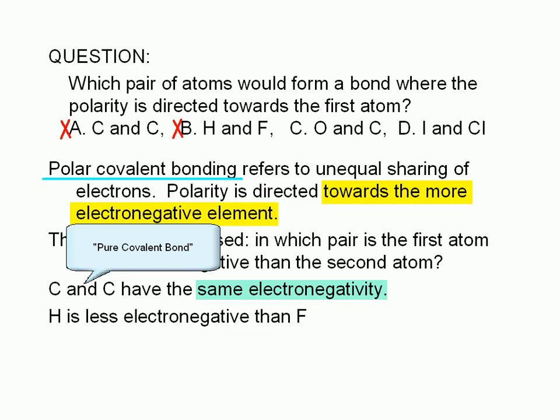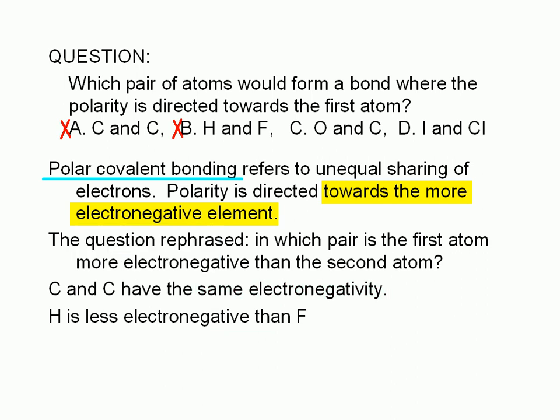Choice B is also wrong. You should know that fluorine is the most electronegative atom. So between hydrogen and fluorine, the polarity would be directed towards fluorine.